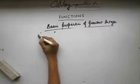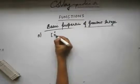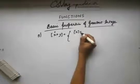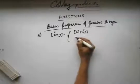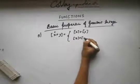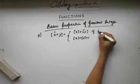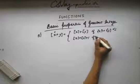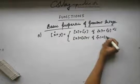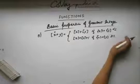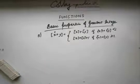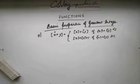Let's discuss the fifth important property, which is ⌊x+y⌋ equals — in the first case, if the fractional part of x plus the fractional part of y is less than 1, it equals ⌊x⌋+⌊y⌋; and if the fractional part of x plus the fractional part of y is greater than or equal to 1, it equals ⌊x⌋+⌊y⌋+1. You can always verify this using any real values of x and y, but let's prove this.